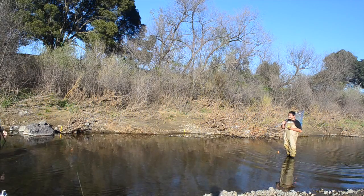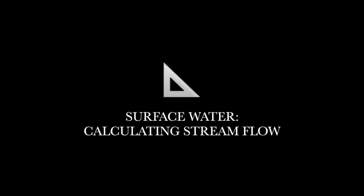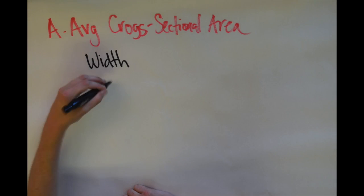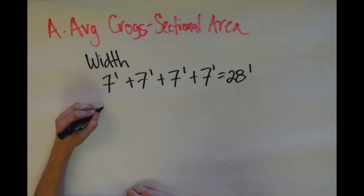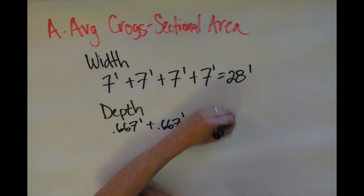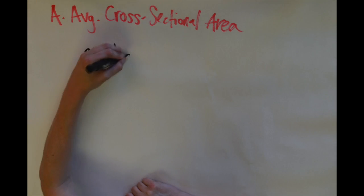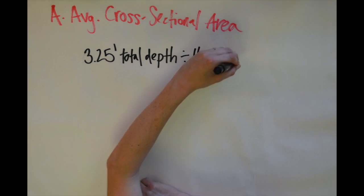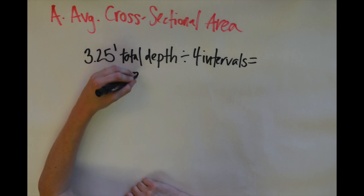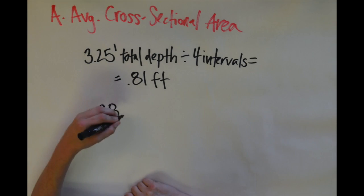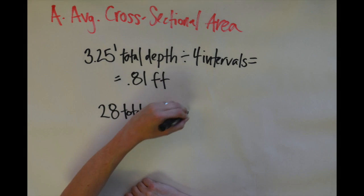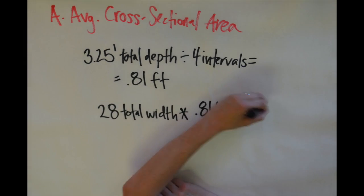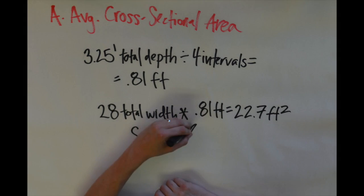Now that you've filled out the EPA data form, we're ready to figure out the average cross-sectional area using the data from the data form. We're going to start out by calculating the total width and then calculating the total depth. In calculating the average depth, we're going to take the total depth and divide that by the four intervals we marked on the line, which gives us a total of .81 feet for the average depth. Then we take the total width, multiply that by the average depth, and we get our number for section 1.